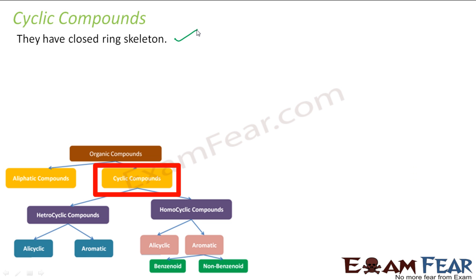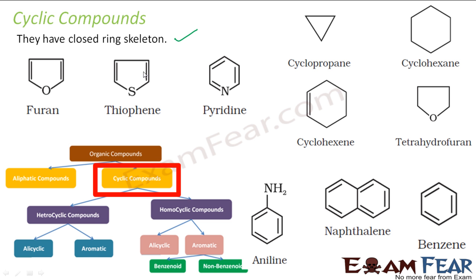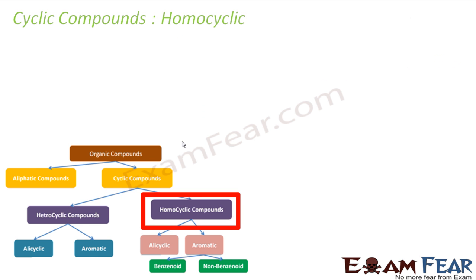For cyclic compounds, the only requirement is a closed ring skeleton. Examples include furan, thiophene, pyridine, cyclopropene, cyclohexene, tetrahydrofuran, aniline, naphthalene, and benzene — all have closed rings. However, some have only carbon in the ring, some include oxygen, sulfur, or nitrogen, and some are aromatic while others are not, so we further classify cyclic compounds into homocyclic and heterocyclic.